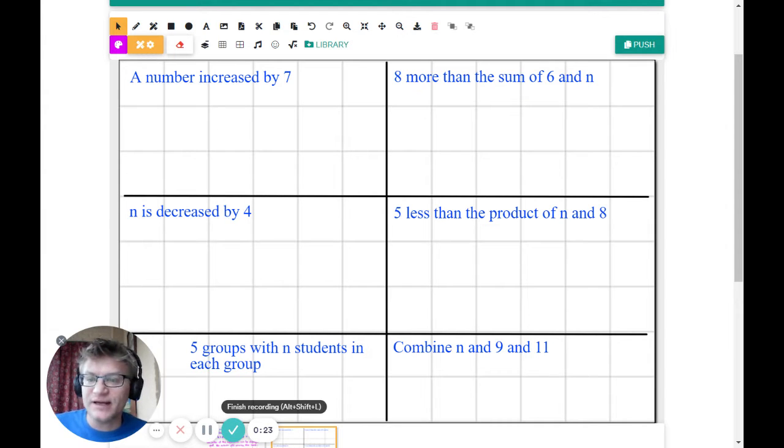What we're going to do is take these statements and turn them into expressions. Then we're going to plug in a number for n. So a number n increased by - we talked about increased, increased means plus in these kinds of statements. So we'd say n plus 7.